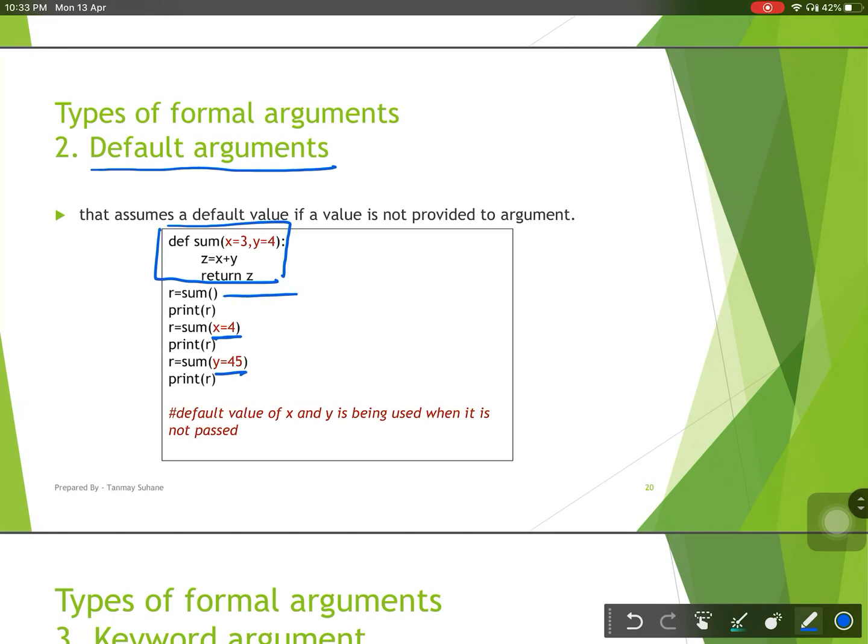Here in this case, I am not passing any argument. It is taking x and y by default. So we have to take x is equal to 3 and y is equal to 4 in our function declaration. If we don't do this, it will not take any argument by default.